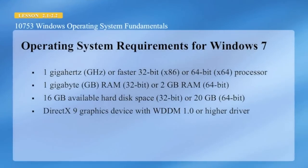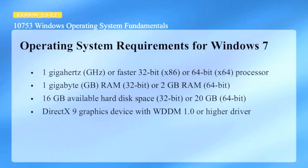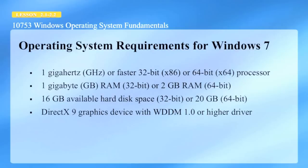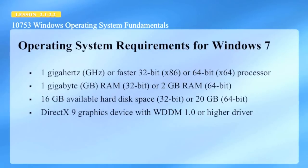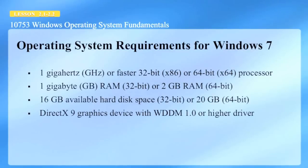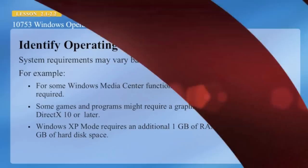Here are the operating system requirements for Windows 7 — any test from Microsoft will want you to know this. The requirements are: 1 GHz or faster 32-bit or 64-bit processor; 1 GB of RAM for 32-bit; 2 GB of RAM for 64-bit; 16 GB available hard drive space for 32-bit; and 20 GB available hard drive space for 64-bit.